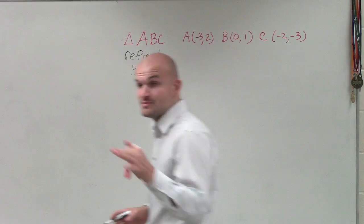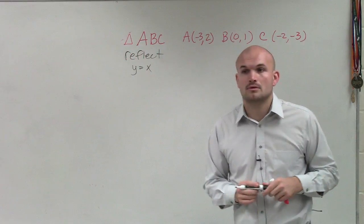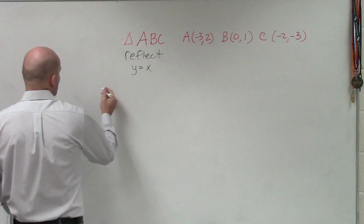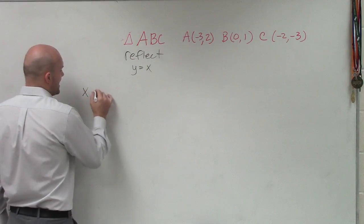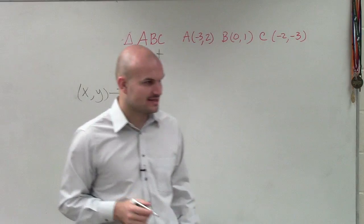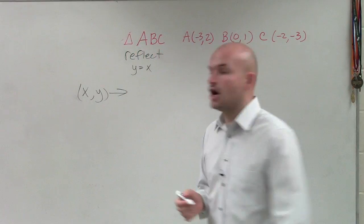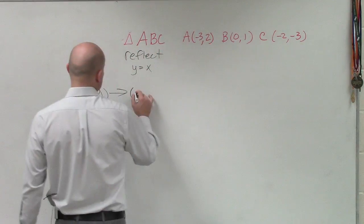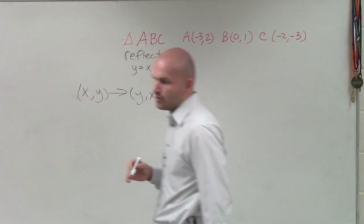Aren't you supposed to flip the x and the y? We swap our points, correct. So if I had a coordinate point (x, y) and I was going to reflect it across the y equals x line, all I simply do now is swap the y and the x coordinates.